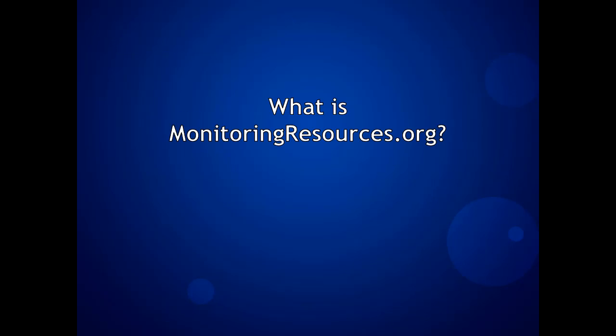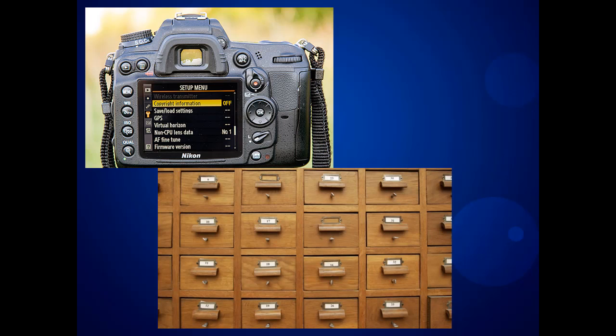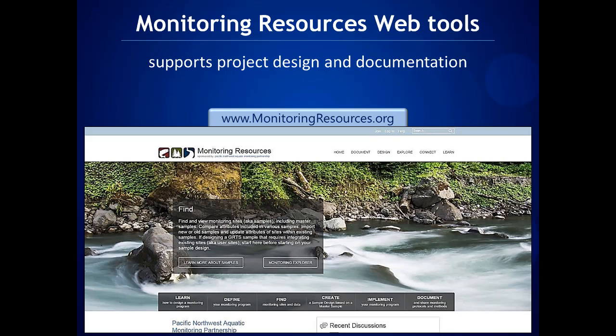What is Monitoring Resources? It is a metadata database. What is metadata? To simplify, it is data about data. A metadata database is, like a card catalog, a lot of standardized metadata about a lot of data. The standards include such things as fields with titles, dates, abstracts, authors, and a locator to data. Monitoring Resources is a metadata database, but it is much more — it is a suite of web tools that support monitoring and research design and collaborative metadata and data sharing.